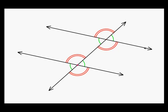In this diagram, we have two parallel lines that are cut by a transversal. Just like you learned when two lines intersect and you get two pairs of vertical angles that are congruent, the same thing happens in this diagram — not just once, but twice.